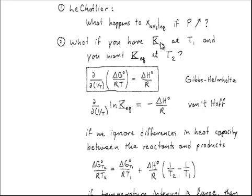What if you have the equilibrium constant at temperature T₁ and want it at temperature T₂? There are actually two names for this equation: the Gibbs-Helmholtz equation and the van't Hoff equation — they are exactly the same because ΔG°/RT equals minus the log of the equilibrium constant. The first approximation is to assume reactants and products have the same heat capacity, so the enthalpy of reaction remains constant as temperature changes. Integrating the Gibbs-Helmholtz equation then gives ΔG°(T₂)/RT₂ = ΔG°(T₁)/RT₁ plus ΔH°/R multiplied by the difference in 1/T factors — a straightforward approximation.